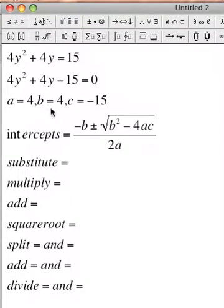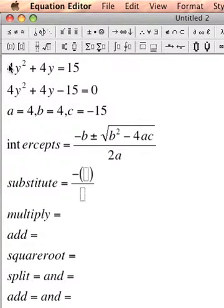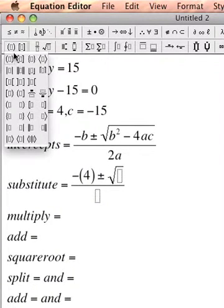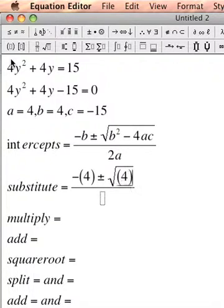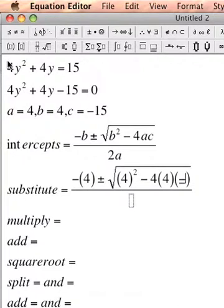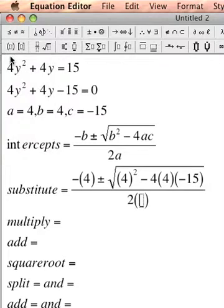So now I can go through my quadratic formula. And when I substitute, the negative stays the same. I'm going to replace b with 4, still keep my plus minus, and still keep my square root. And now I'm going to replace b with 4 and keep the square on the outside. Minus 4, I'm going to replace a with 4, and I'm going to replace c with negative 15. And I'm going to divide that by 2 and open my parentheses and replace a with 4.